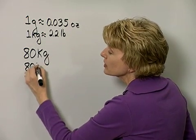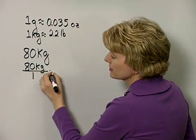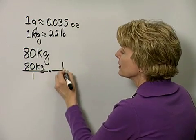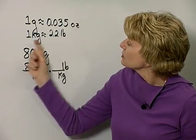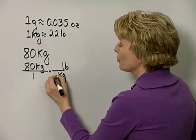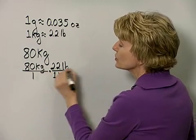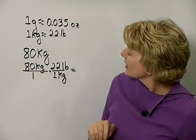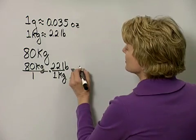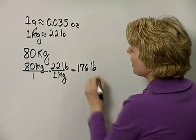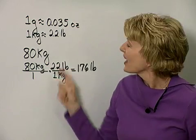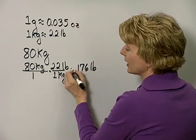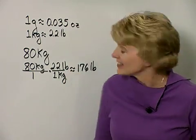We can use unit fractions. We multiply by a unit fraction that has kilograms in the denominator and pounds in the numerator, using the approximation that one kilogram is approximately two and two-tenths pounds. The kilograms divide out, leaving eighty times two and two-tenths over one, which equals approximately one hundred seventy-six pounds. So the man weighing eighty kilograms weighs approximately one hundred seventy-six pounds.